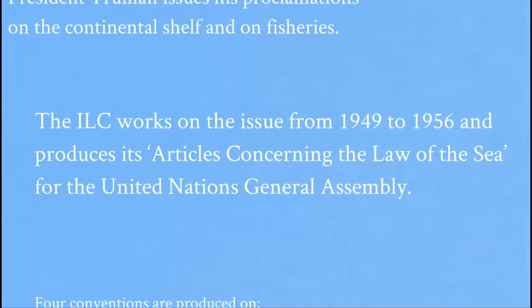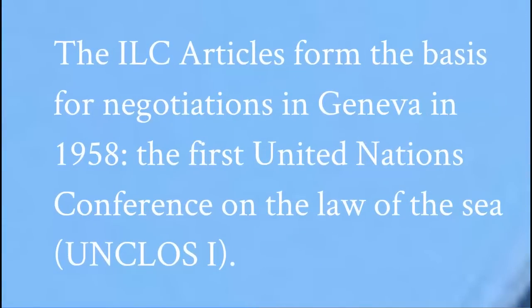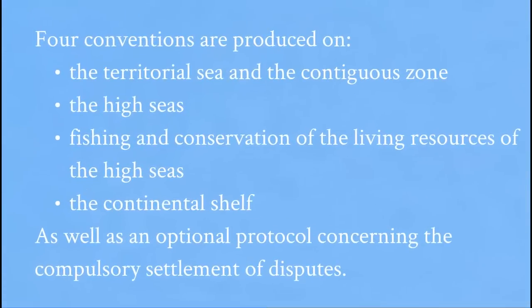The ILC works on the issue from 1949 to 1956 and eventually produces its articles concerning the Law of the Sea, submitting them to the UN General Assembly. These articles formed the basis for negotiations in Geneva in 1958 — the first UN conference on the Law of the Sea, sometimes referred to as UNCLOS I. In debating the ILC articles, they are split into a variety of treaties on different topics, producing treaties on the territorial sea and the contiguous zone, on the high seas, on fishing and conservation of the living resources of the high seas, on the continental shelf, and an optional protocol on compulsory dispute settlement.